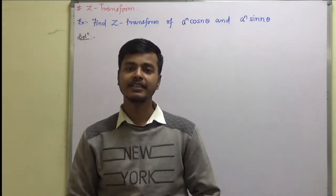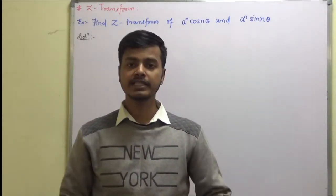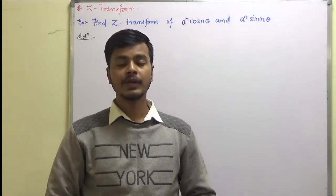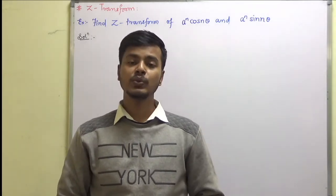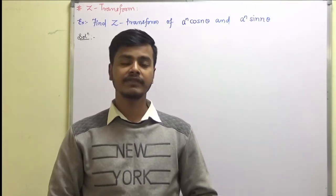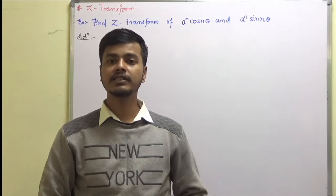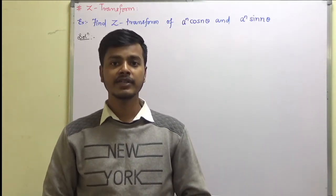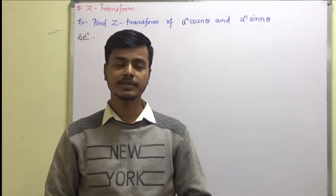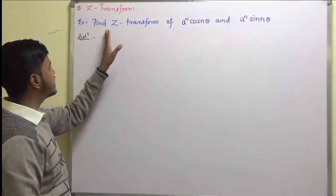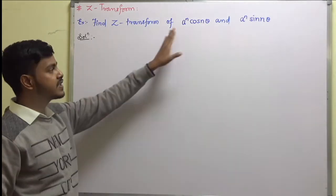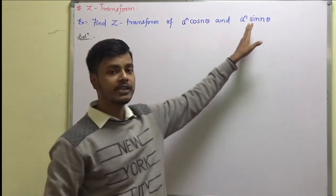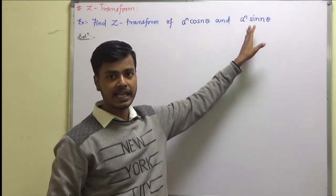Hello and welcome to this learning video. In this learning video we are going to take examples where we can make use of the appropriate property that we have learned in the Z transform. So let us start with this problem. This problem says: find the Z transform of a to the power n cosine n theta, and a to the power n sine n theta.